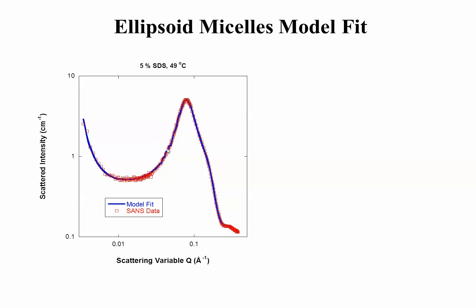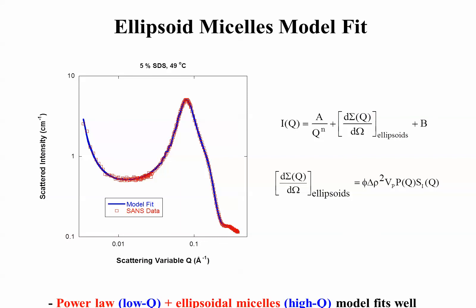Let's look at the case of 5% STS at 49 degrees C. So, you get the peak here, structure factor, you get a shoulder here, ellipsoidal, and you get a low-Q almost like background due to what is called clustering. As far as the model, we use what is called the power law at low-Q and the ellipsoid of micelles at high-Q and then turn the crank. This is the model fit in blue and the SANS data in red is pretty good.